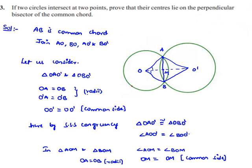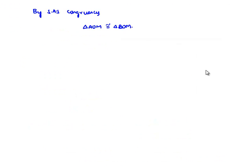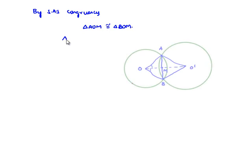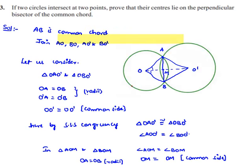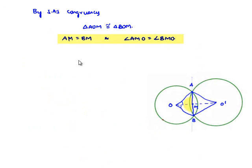When two triangles are congruent, their corresponding sides and corresponding angles can be equated. Therefore, AM is equal to BM, and we can equate the angles: angle AMO is equal to angle BMO. But angle AMO and angle BMO form a linear pair, so their sum is equal to 180 degrees.